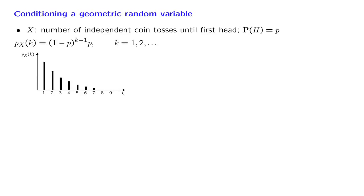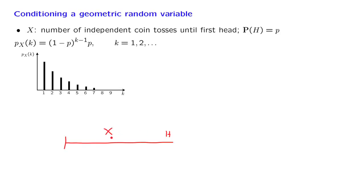We will now work with a geometric random variable and put to use our understanding of conditional PMFs and conditional expectations. Remember that a geometric random variable corresponds to the number of independent coin tosses until the first head occurs, where P is a parameter that describes the coin — it is the probability of heads at each coin toss. We have already seen the formula for the geometric PMF and the corresponding plot.